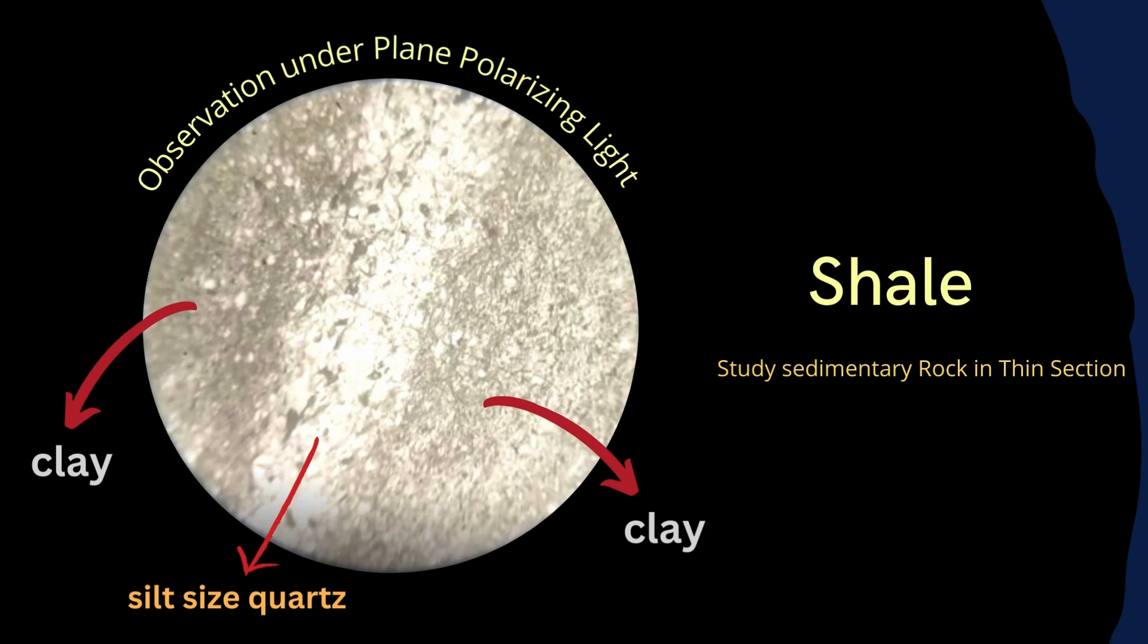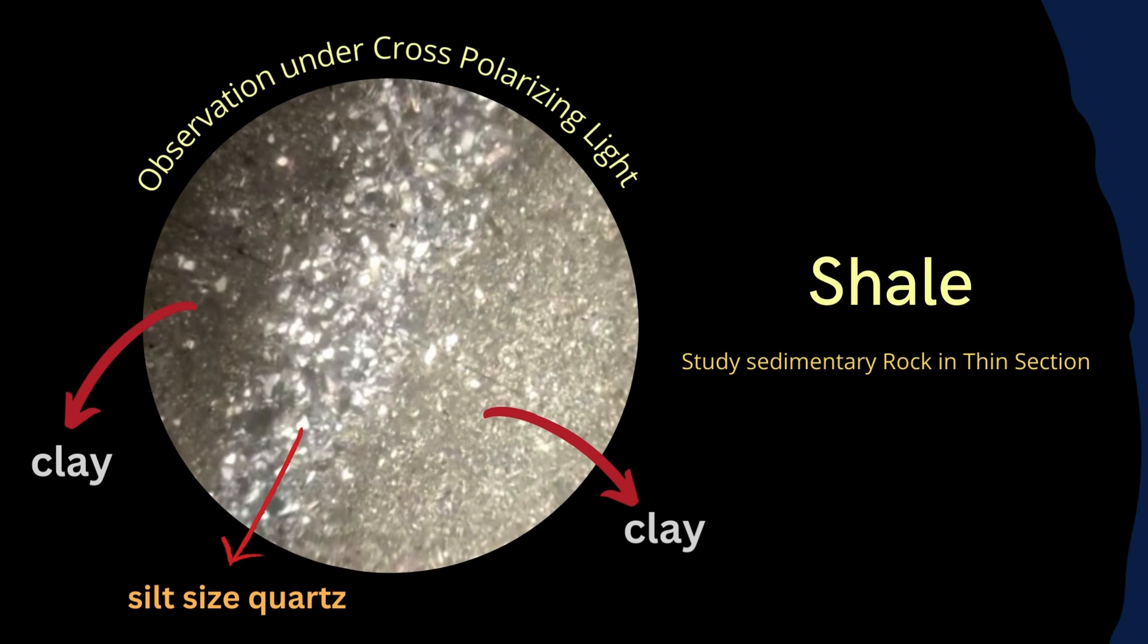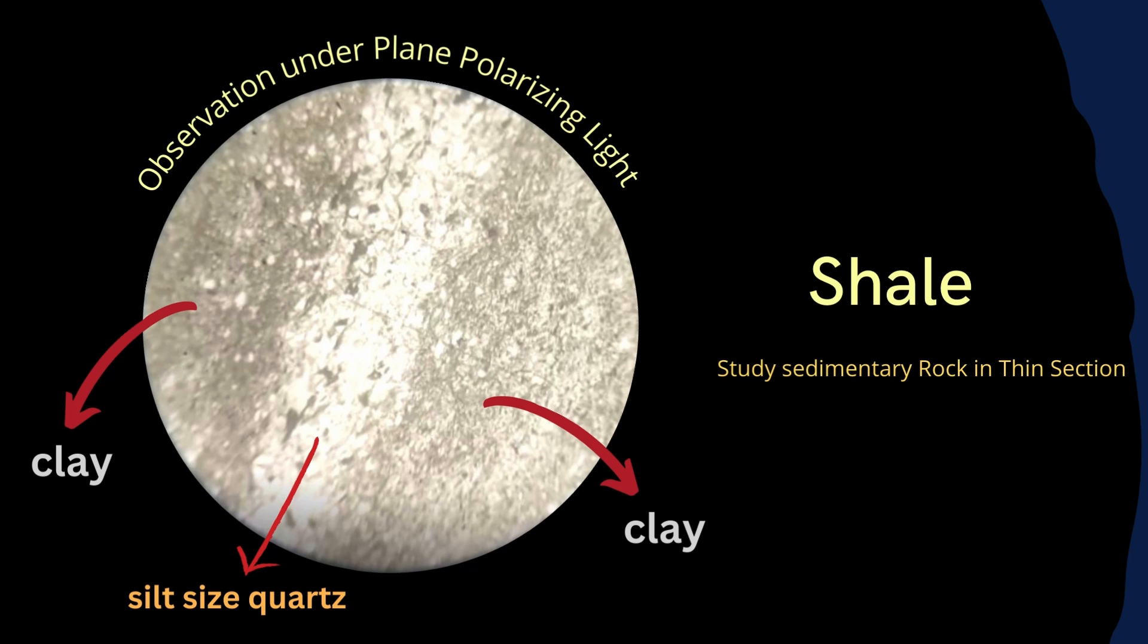Here you can see there is alternating color. The middle streak is built of silt size quartz and the other sides are clay. This is the plain polarized view and this is the view of shale in thin section under the crossed polars. You can also observe the alternating nature of clay and silt size quartz.